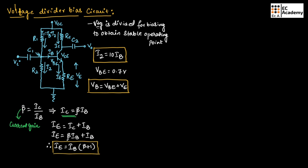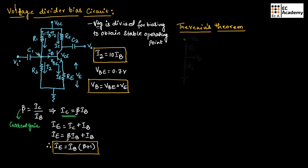You need to remember all these formulas, which are very important while solving problems. Now, let us simplify this voltage divider bias circuit using Thevenin's theorem. Using Thevenin's theorem, we will simplify the input side. Here we have Vcc, R1, and R2, which is connected to ground — this is the input side circuit which we need to simplify.